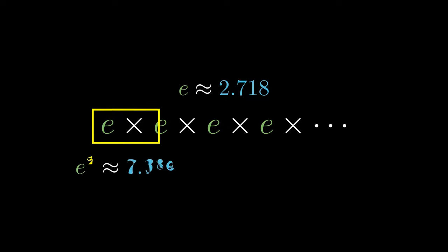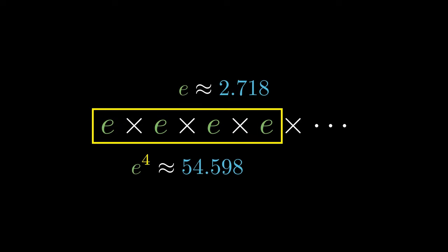Now e to the 2 is multiplying e by itself, and this approximates to 7.389. Likewise, multiplying e 3 times gives 20.086, and multiplying e 4 times gives 54.598 approximately.